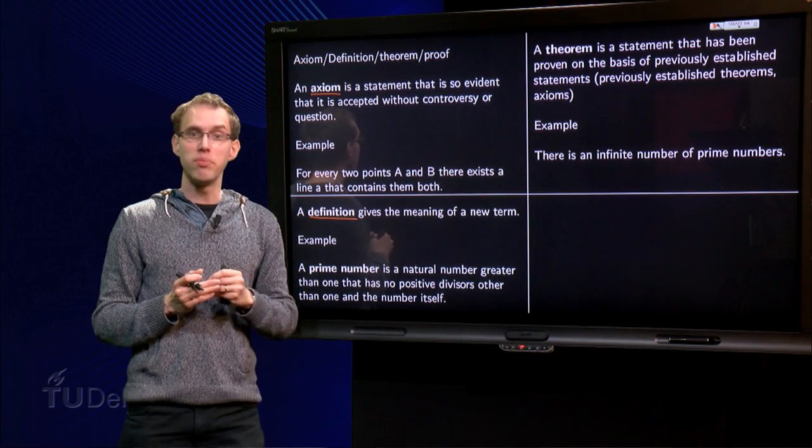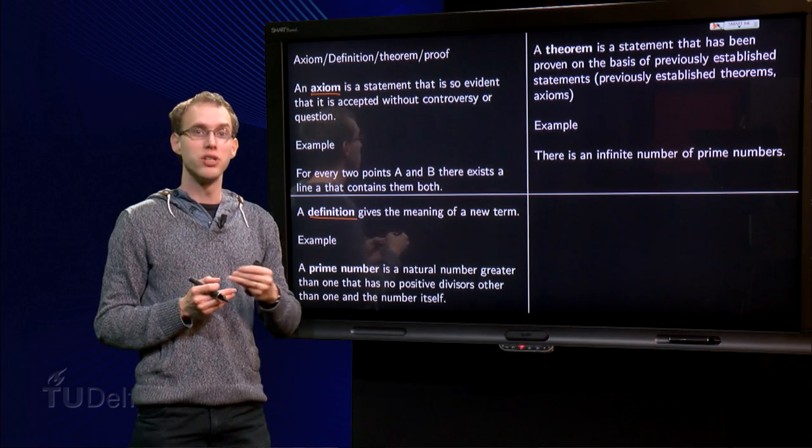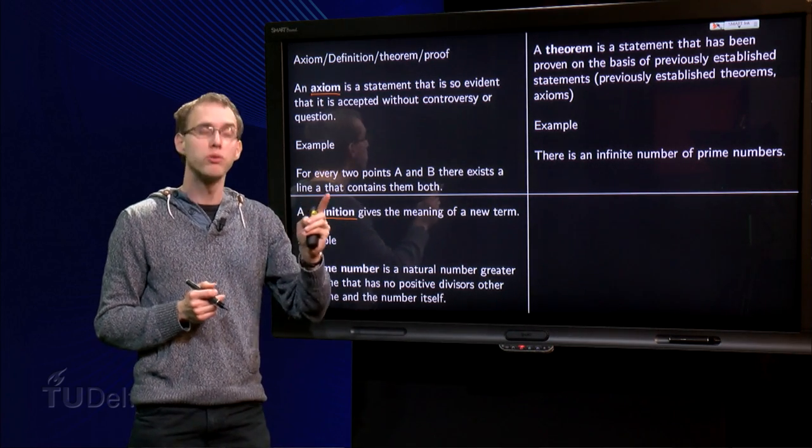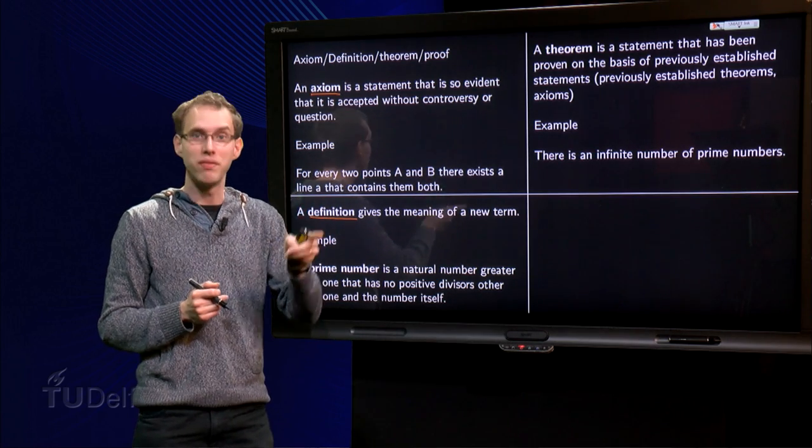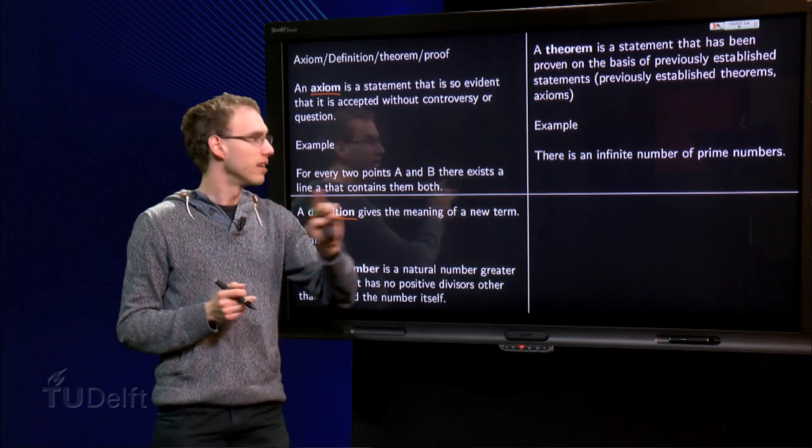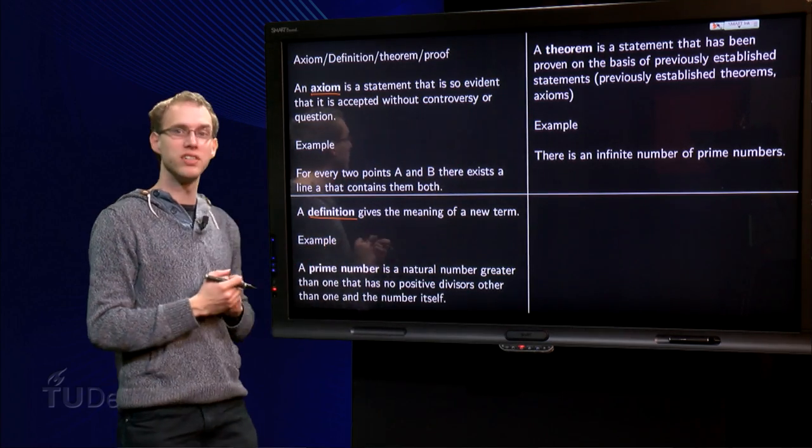An example of a theorem is, there exists an infinite number of prime numbers, so you have no highest prime number. The prime numbers are 2, 3, 5, 7, 11, 13, and you can go on like this forever. That's a theorem, it says something about the previous definition.